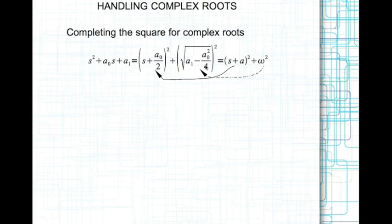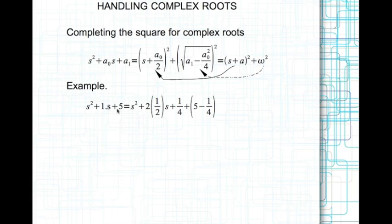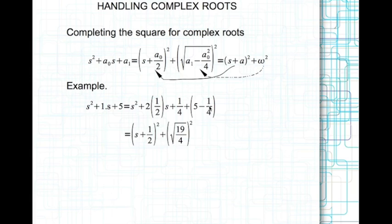Let's look at an example. Here s squared plus s plus 5 can be written as s squared plus 2 times (1/2)s plus 1/4. This is (s plus 1/2) squared. Since we added 1/4, we need to remove 1/4, so it's 5 minus 1/4. That gives us (s plus 1/2) squared plus (√(19/4)) squared.